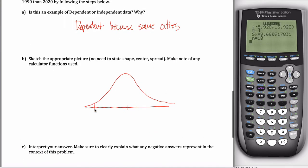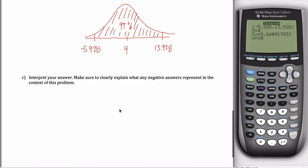The bounds go from negative 5.928, all the way up to 13.928. The middle being 4 here. And then I know this is a 99% confidence interval. So that's how much area I want to shade in the middle of the distribution. So there's a picture.